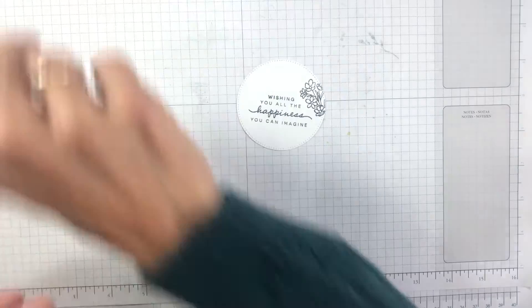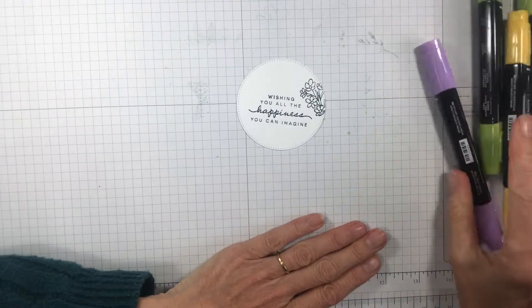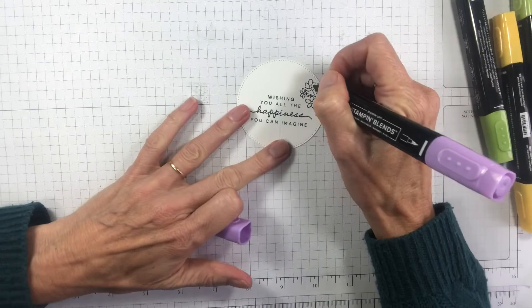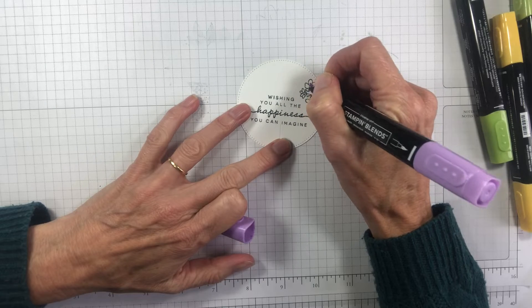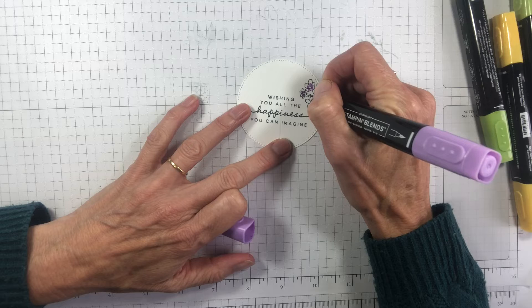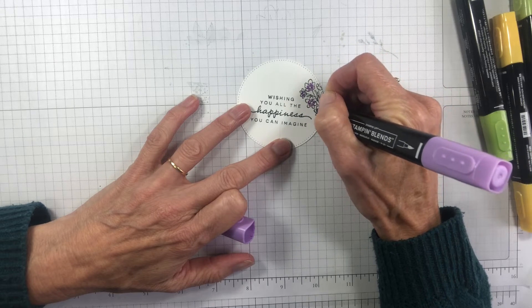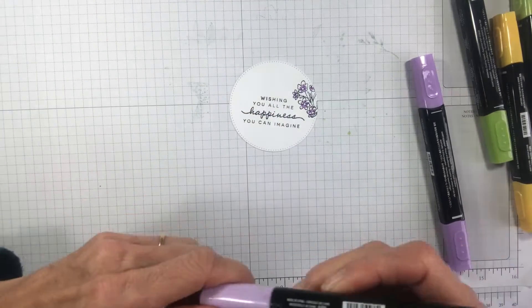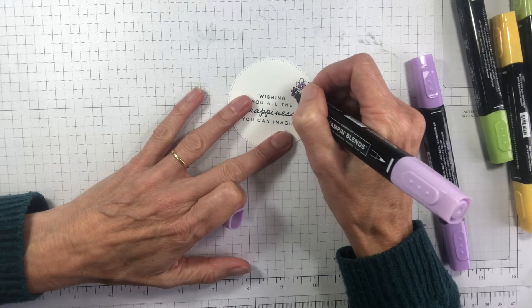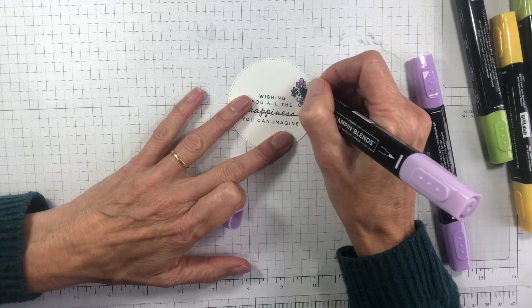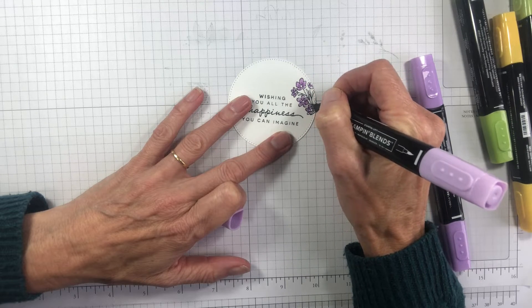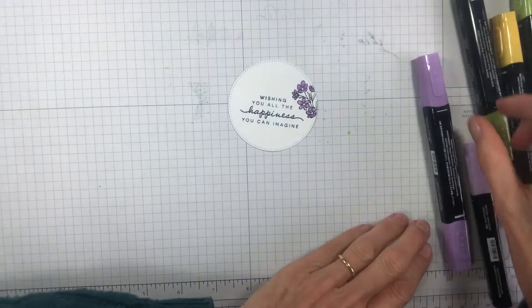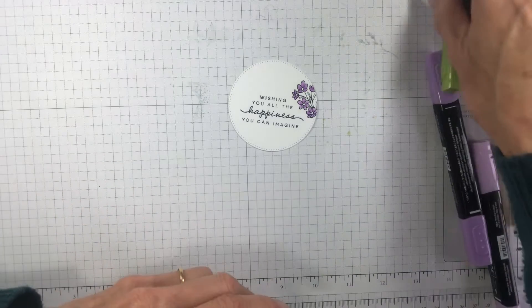And we're going to color that quickly with the Stampin' Blends. So I'm just going to use, I don't have fresh freesia, but the Highland Heather works really well with it. So I'm going to start with dark. I know you usually do the light first, but because they're such tiny flowers, you don't need to do a lot of blending. But I'll add a little bit of the dark down near the centers of the flowers. Using the fine tip works better. And this time I'm just using the light to blend that out to the edges. We're also going to use our Granny Apple Green. I'm just going to use the light just to show it.